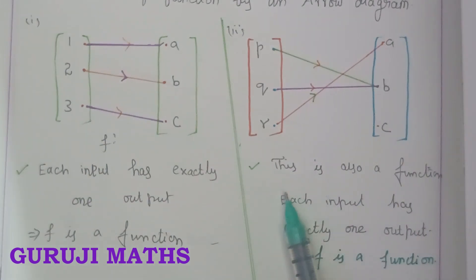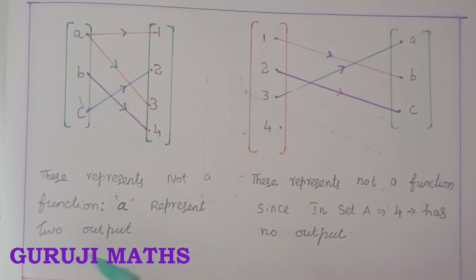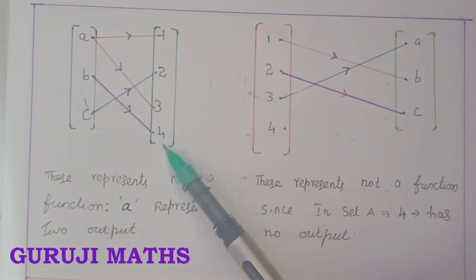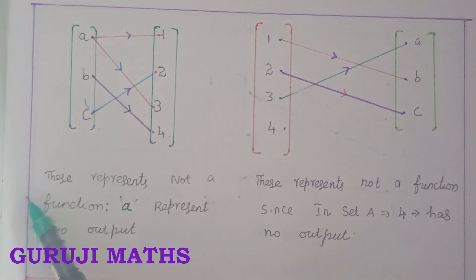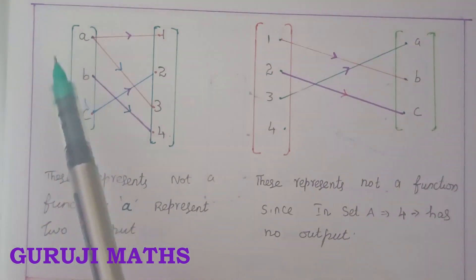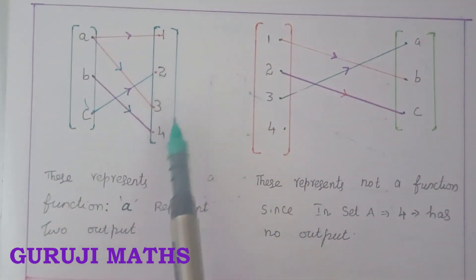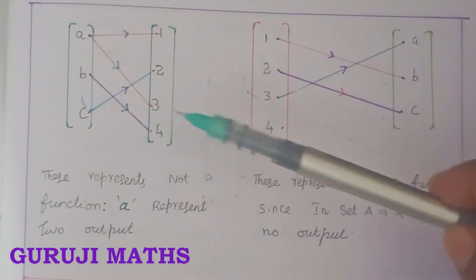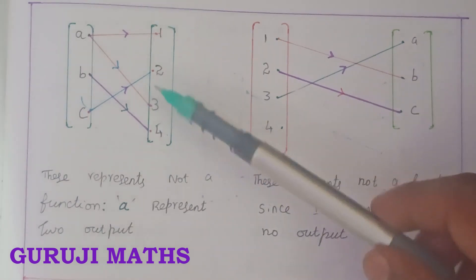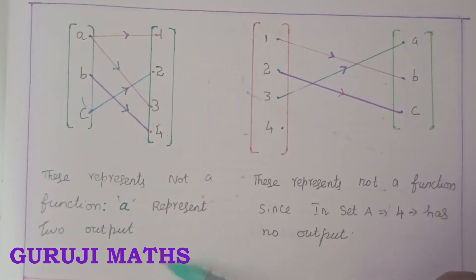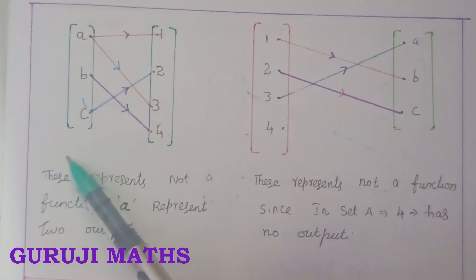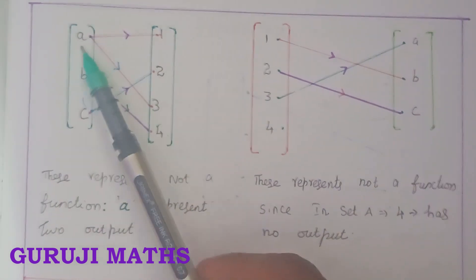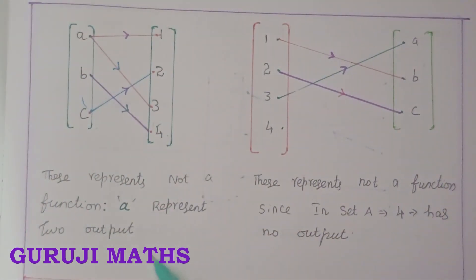Now we have a representation: A, B, C on one side and 1, 2, 3, 4 on the other. Each input has only one output. But here, one input has two outputs — that is not allowed. B, C, and T each have one output, but A has two outputs, so it is not a function.